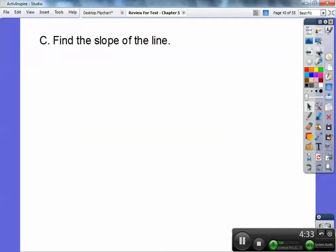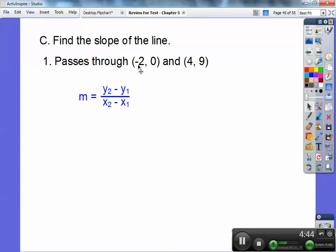And then we're going to find the slope. Don't forget about slope. When it passes through two points, you're going to use the slope formula. y sub 2 minus y sub 1 over x sub 2 minus x sub 1. Right here, this is my x1, y1. This is my x2, y2.